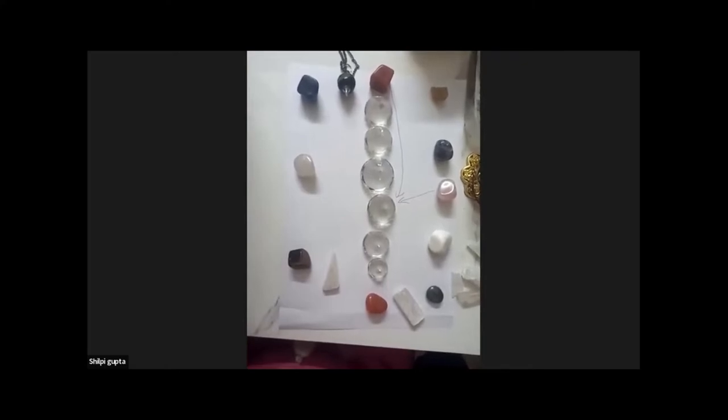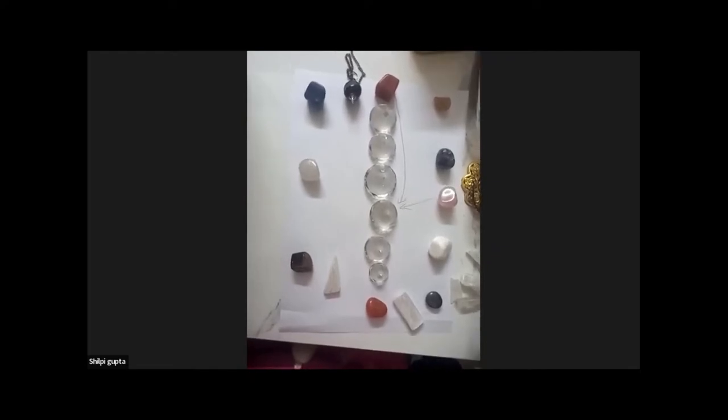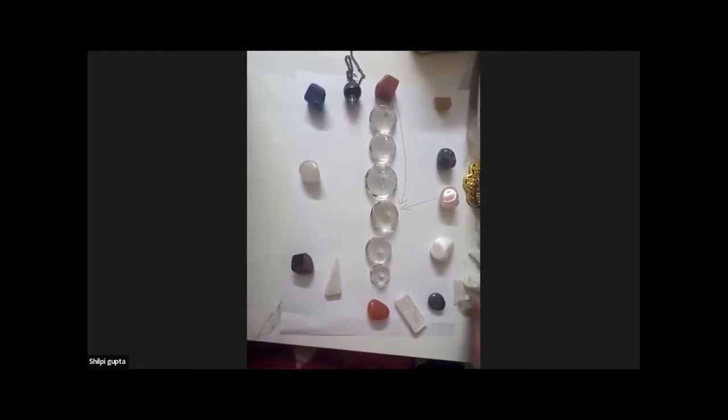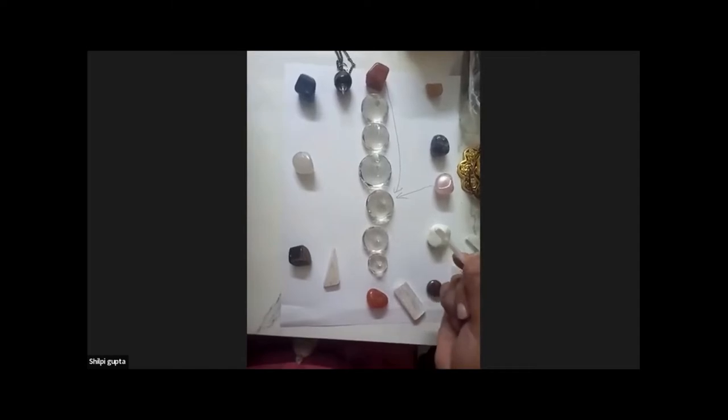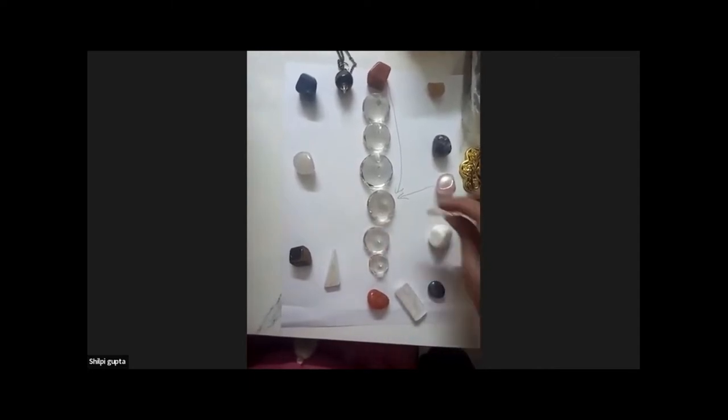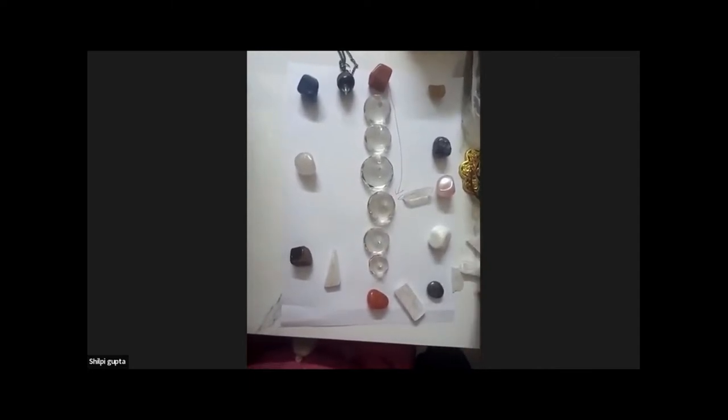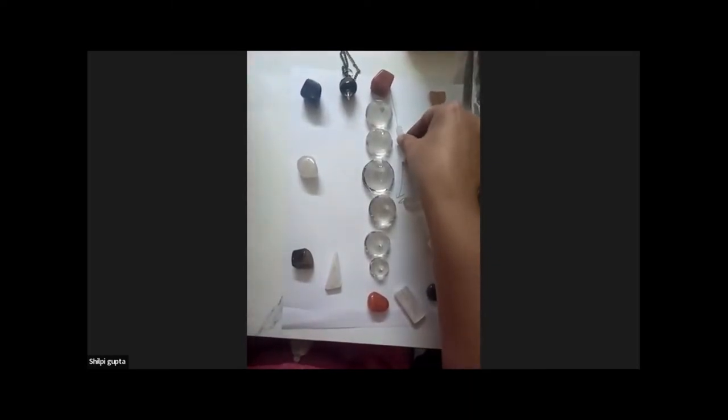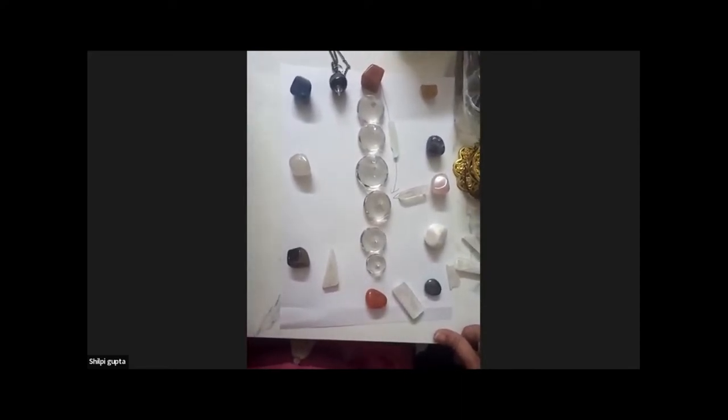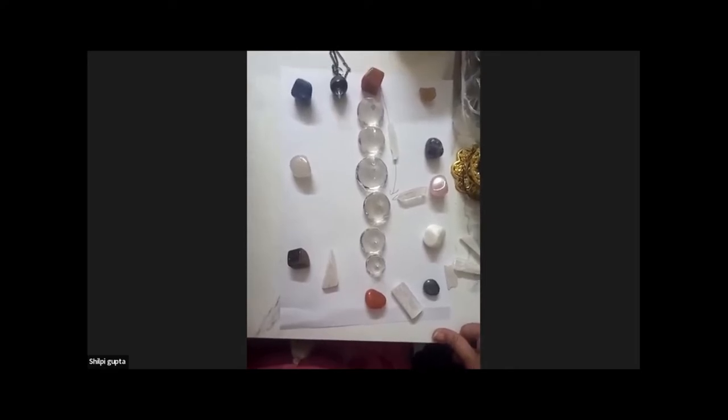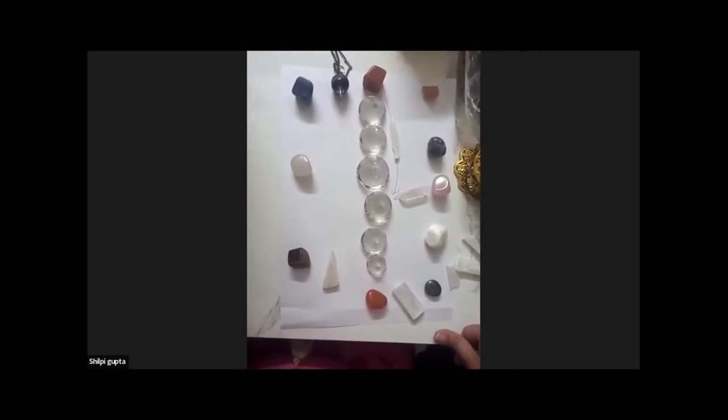My intention is the energies of these two crystals keep on balancing the energies of my solar plexus chakra. Now what can I do? I have these small selenite pencils or you can use little lemurian for direction. So what can I do? We have taken direction towards my solar plexus chakra.